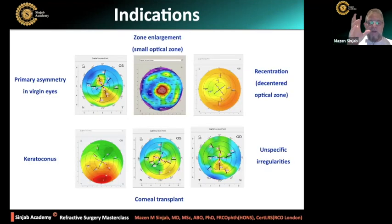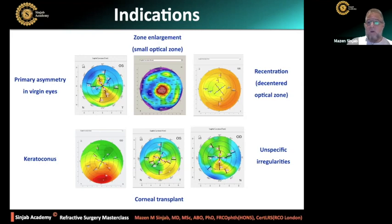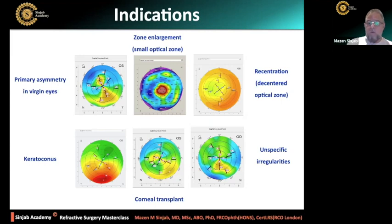In general, the indications are as follows: maybe primary asymmetry in the virgin eye — a normal eye, no problems at all, transparent cornea, no previous operations, no keratoconus, but there is asymmetric astigmatism. Maybe it is a small optical zone, so the aim is to enlarge the zone. Maybe recentration of a decentered optical zone. Maybe keratoconus where we want to regularize the cornea. Maybe irregularities of corneal transplantation, or maybe unspecific irregularity.